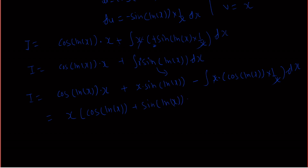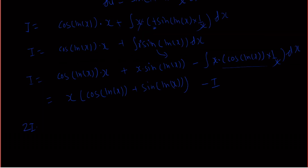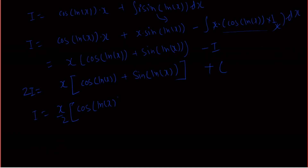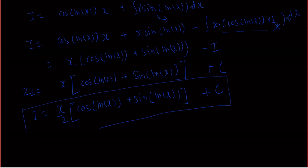Here we have minus times the integration of cos(ln x), which is our original integral. So I'll write it as I. We get 2I equal to x·cos(ln x) plus x·sine(ln x), and therefore I equals x/2 · (cos(ln x) + sine(ln x)) + C. This is how you solve the integration of cos(ln x). If you like my video, subscribe to my channel. See you next video with another fun problem, bye!